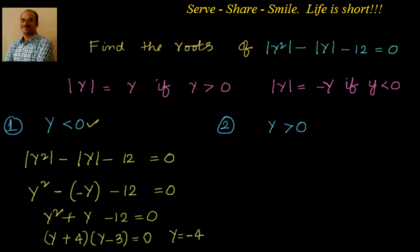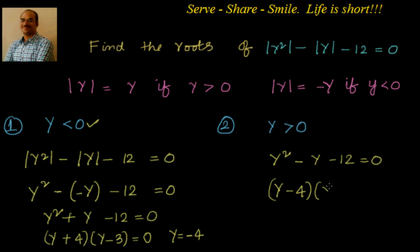For Case 2, where y is greater than 0: absolute value of y equals y and absolute value of y squared equals y squared, so the equation becomes y squared minus y minus 12 equals 0. Splitting the middle term gives (y - 4)(y + 3) = 0, so y = 4 or y = -3. We only take y = 4 since we require y greater than 0.